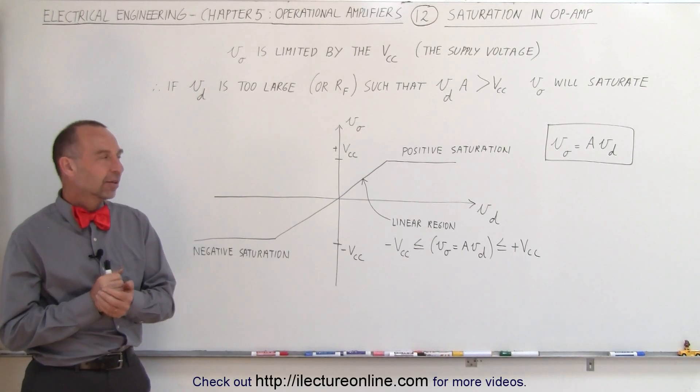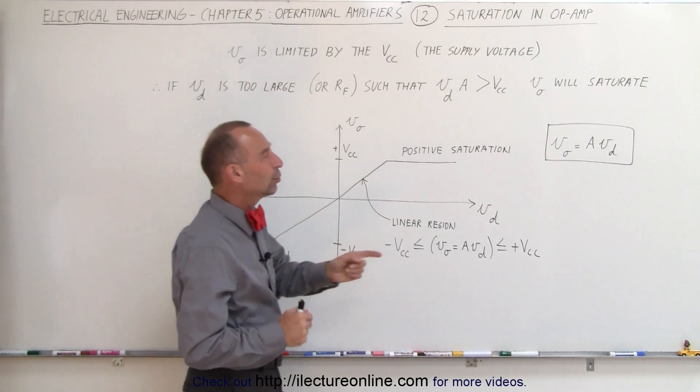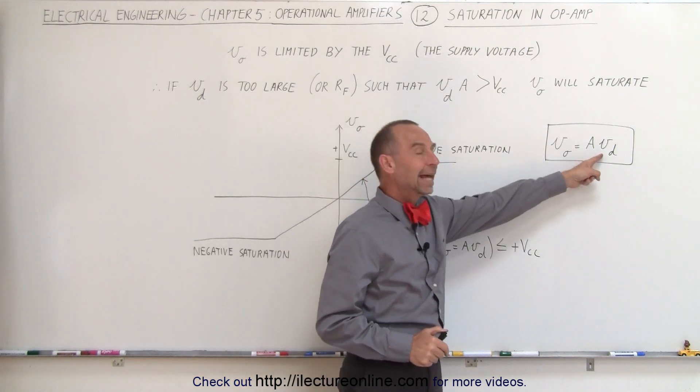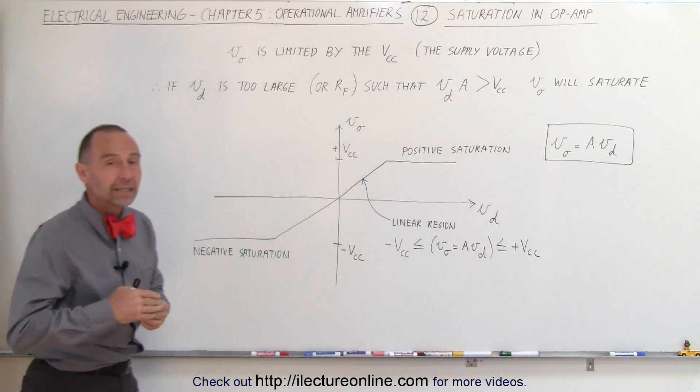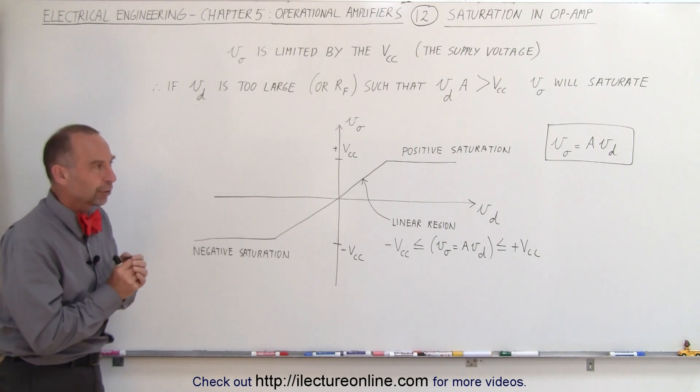Welcome to ElectronLine. Since the output voltage is equal to the product of the open loop gain and the voltage difference between the inverting terminal and the non-inverting terminal,